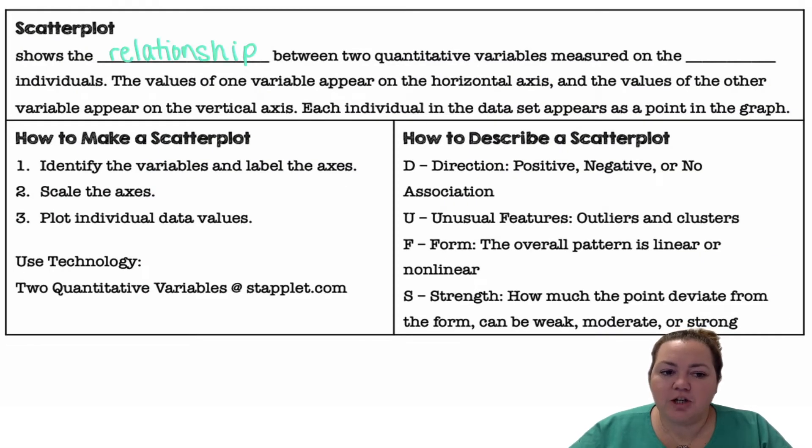A scatter plot shows the relationship between two quantitative variables measured on the same individuals. The values of one variable appear on the horizontal axis and the values of the other variable appear on the vertical axis. Each individual in the data set appears as a point in the graph.